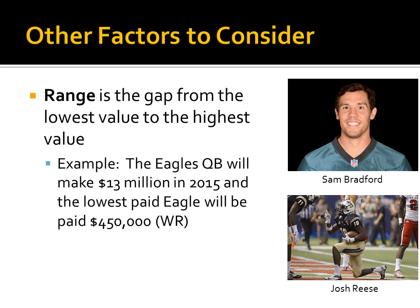Another factor to consider is range — the gap from the lowest value to the highest value. Using football: the Eagles' quarterback in 2015, Sam Bradford, will make 13 million dollars, while the lowest paid Philadelphia Eagle will be paid 450,000 dollars. So the range is between 450,000 and 13 million, which works out to 12,550,000 dollars — calculated by subtracting the 450,000 from the 13 million.